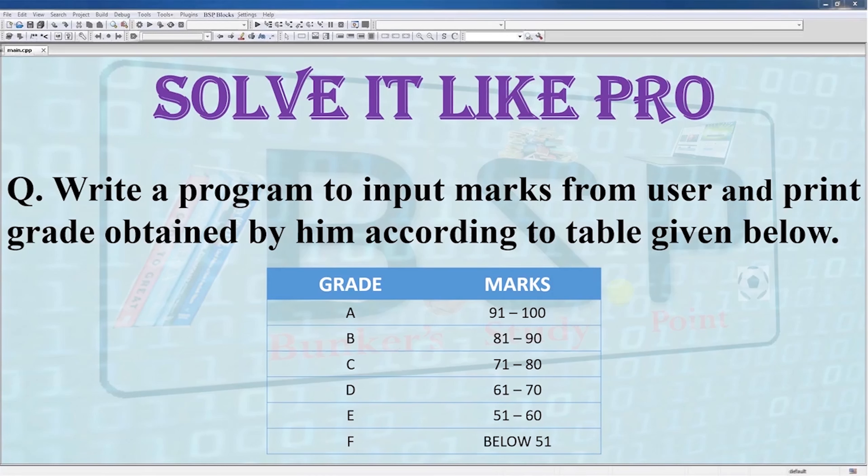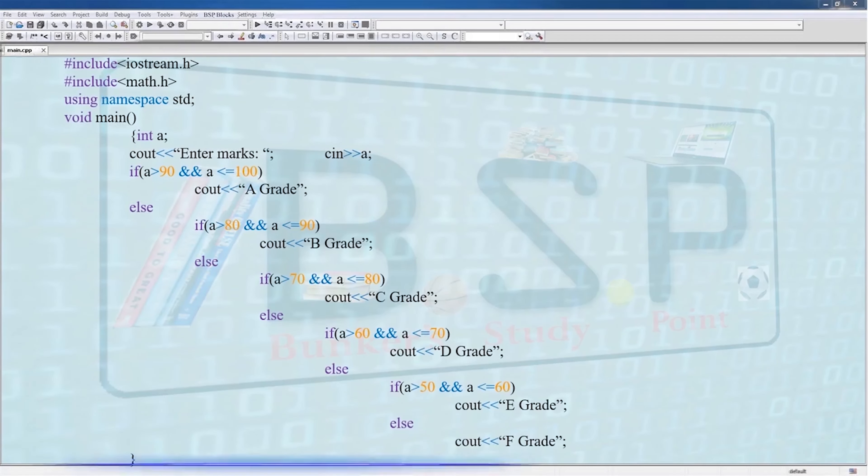The question was: write a program to input marks from user and print the grade obtained by him according to a table given below as a reference. Using the if-else statement in a nested format, we get the following program. Here we only need one integer, a cout for enter marks, and we are getting the value of the percentage the user enters.